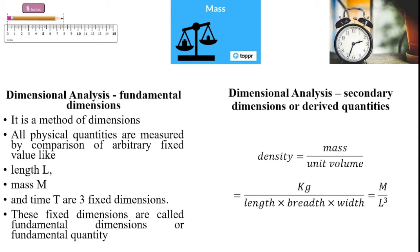These three quantities — length, mass, and time — are the fixed dimensions. These fixed dimensions are called fundamental dimensions or fundamental quantities.